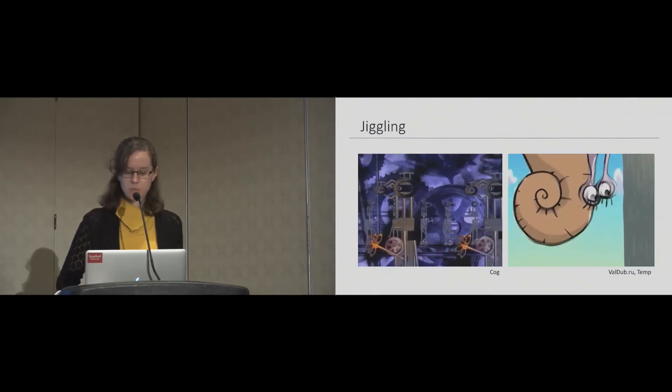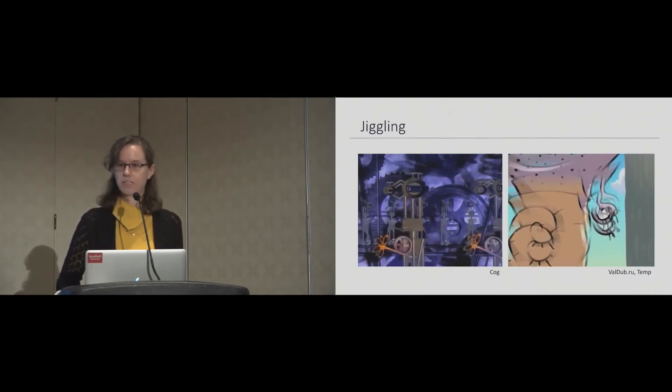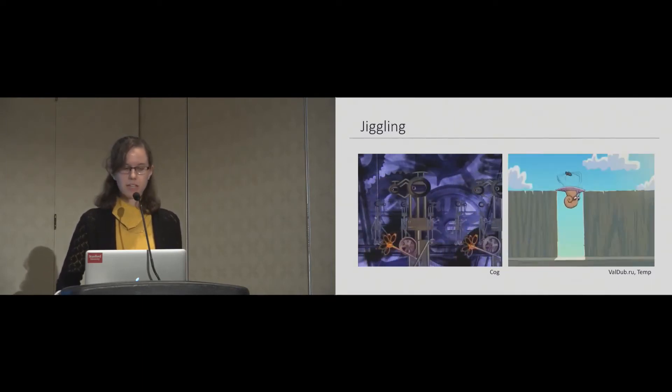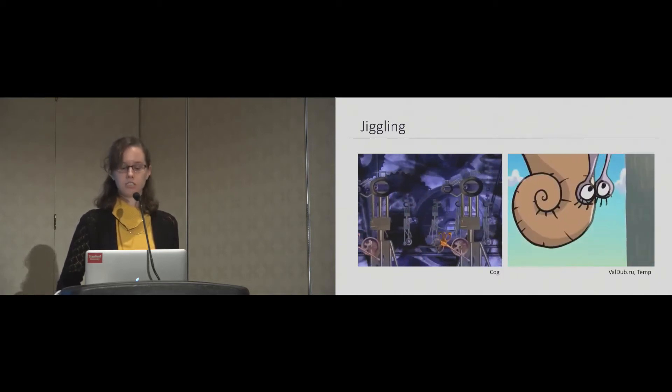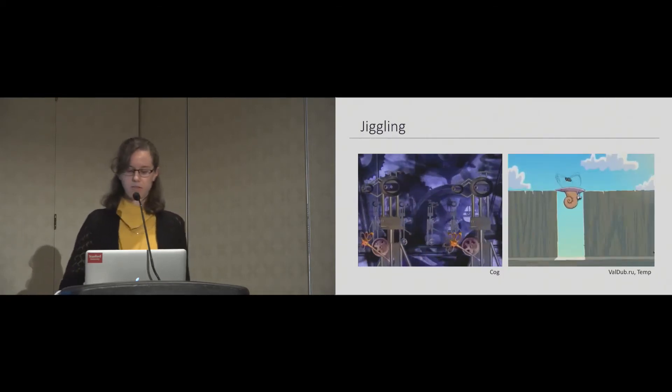Jiggling occurs in small protrusions or appendages like tufts of fur, spikes, or pieces of clothing. They continue to move once the character stops or changes direction, and the jiggling varies with the properties of the relevant parts.